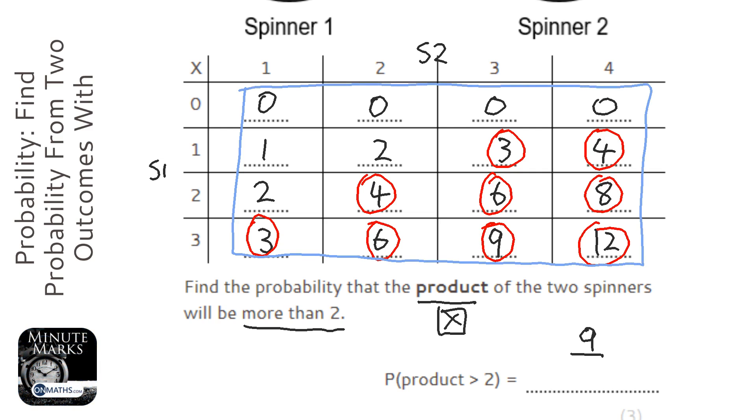So there are in total—and we can count them, or I notice it's a four by four grid—so it's going to be 16. I can't cancel that. Now be careful, a really common mistake is these two, because it says more than two, those don't count. So it has to be three, four, five onwards.